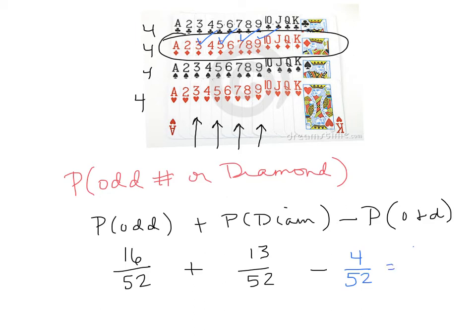That leaves me with 25 out of 52, almost a 50% chance, but not quite. And that gives me 0.4808 when rounded to four decimal places.